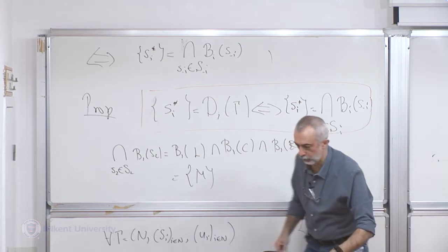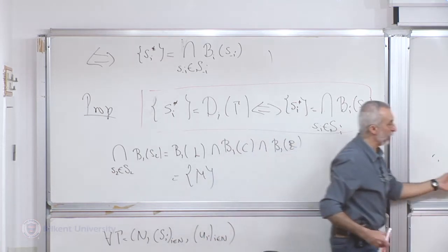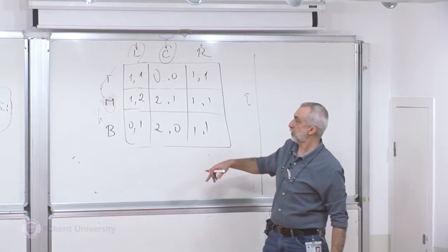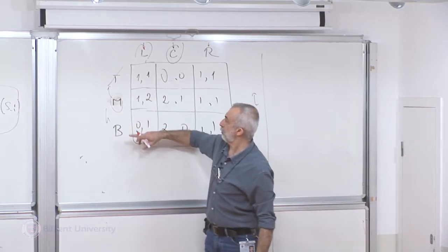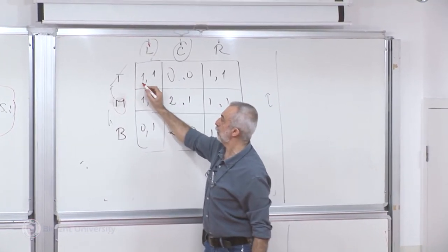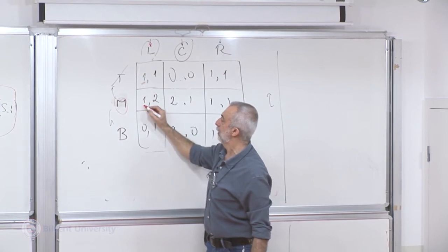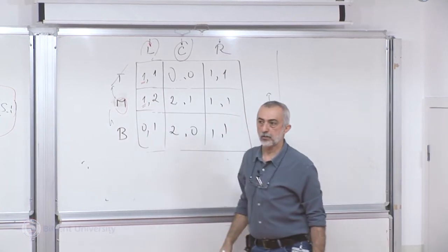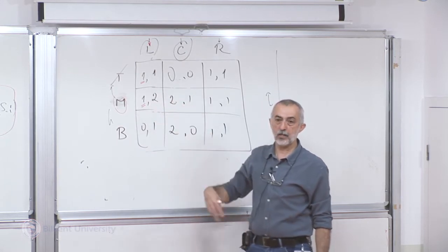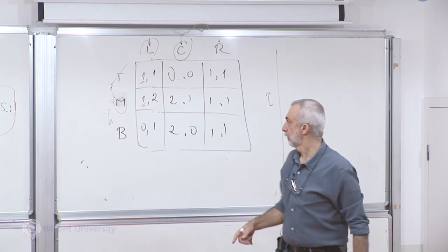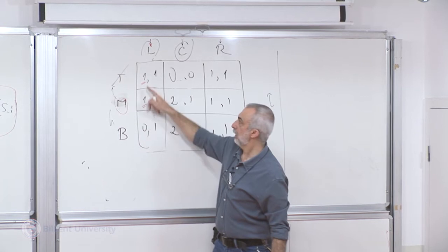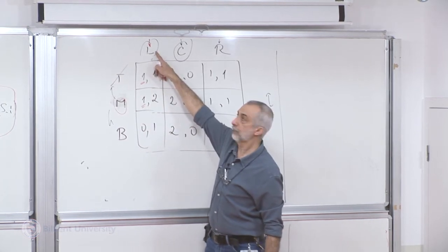With these pictures, we can make it even more useful. Rather than writing the sets, what I can do is mark the best responses. The best response of player 1 when player 2 plays L is T and M. So I'm going to mark the numbers which correspond to player 1's highest payoff. When I mark these two ones, it means that T and M are a best response to L.